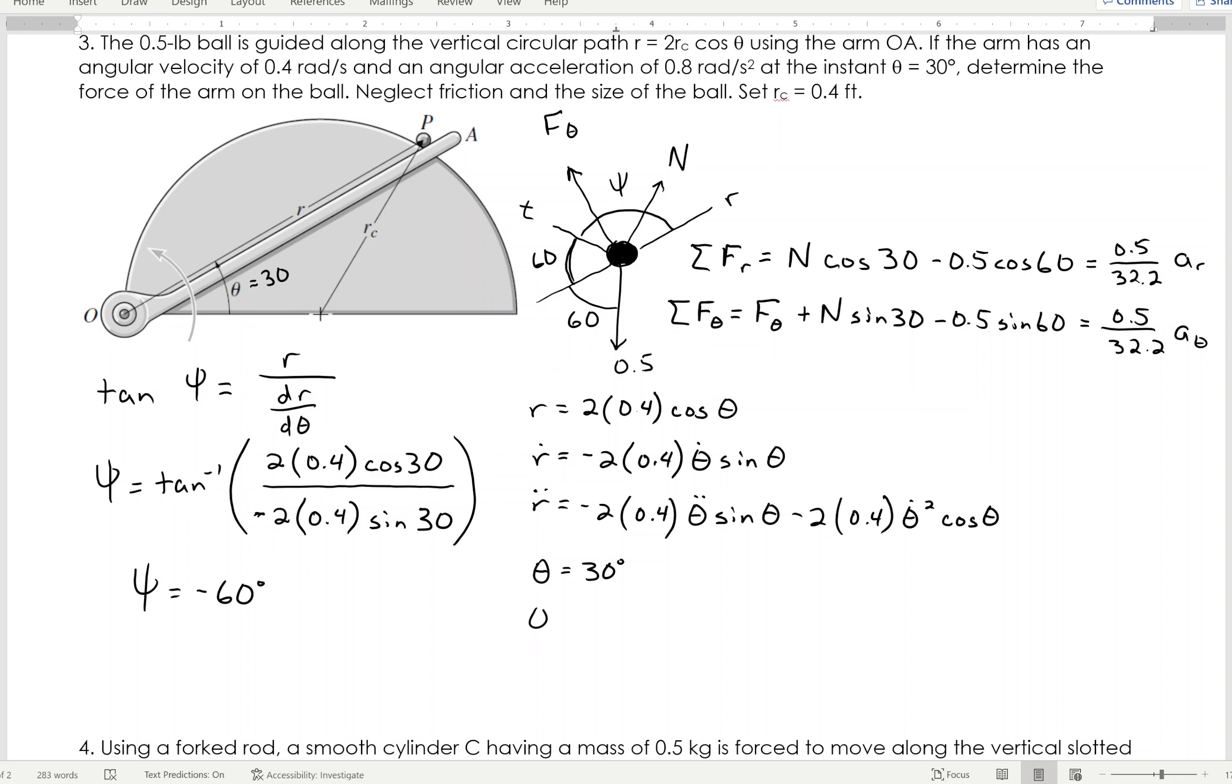So theta, again, we know to be 30 degrees, theta dot is given in the problem statement of 0.4 radians per second, theta double dot is 0.8.